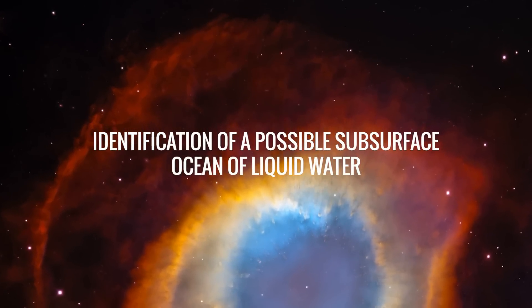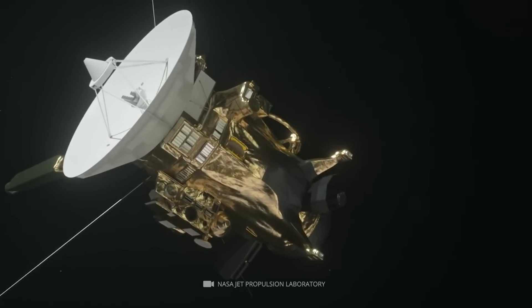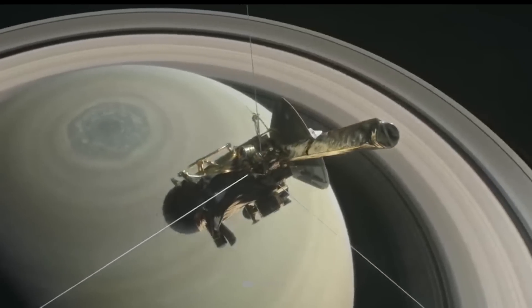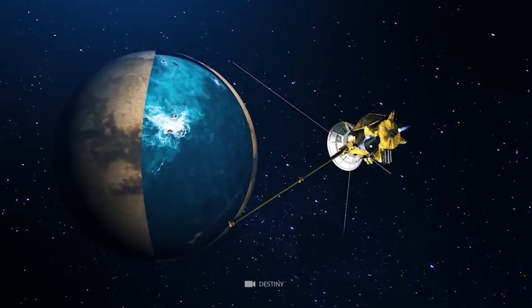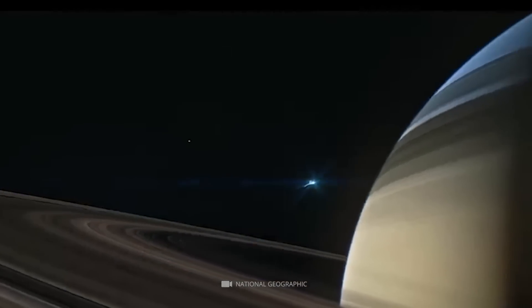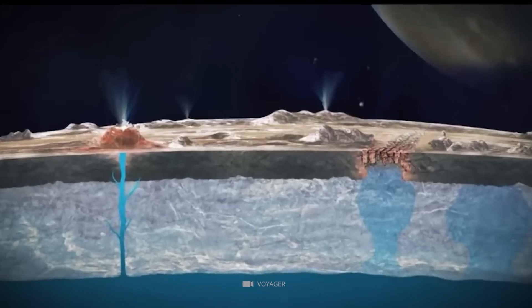Identification of a possible subsurface ocean of liquid water. Another significant discovery made by NASA's Cassini spacecraft during its mission to Saturn was the possible existence of a subsurface ocean of liquid water on Titan, Saturn's largest moon. The discovery was made through the spacecraft's observation of Titan's gravitational field, which suggested there may be a liquid layer beneath the moon's icy surface.